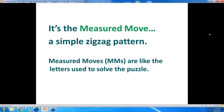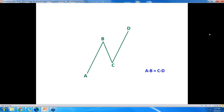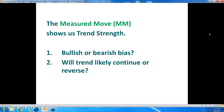The building block is the measured move — a simple zigzag pattern. Measured moves are like the letters used to solve that earlier word puzzle. Let's take a look at what a measured move is. This is the measured move: AB equals CD. I did not invent this — John Murphy talks about it in his book. In a measured move, this is the standard equation. The measured move is powerful to me because it shows us trend strength.